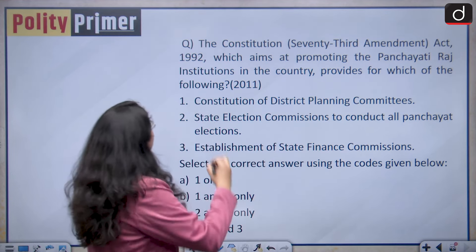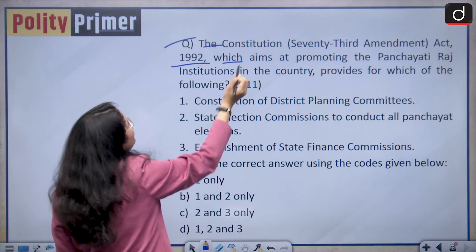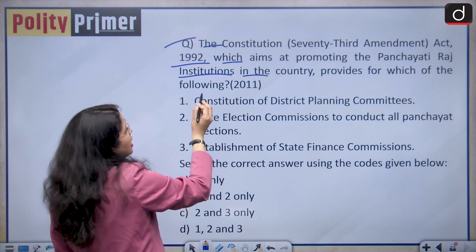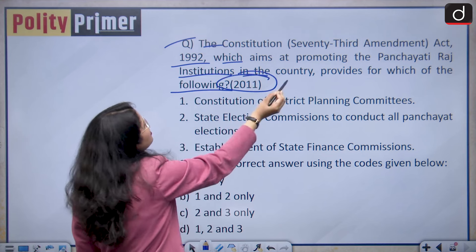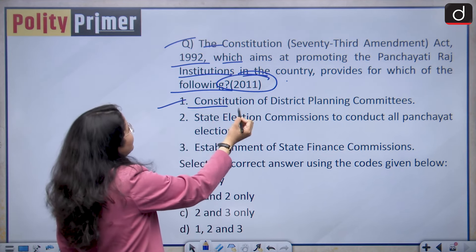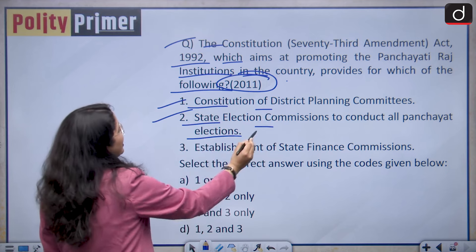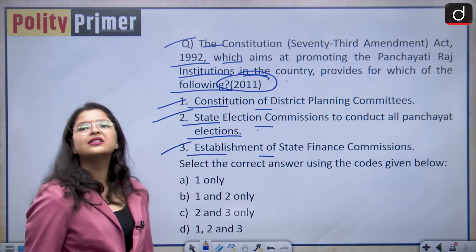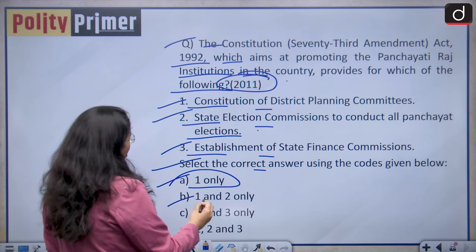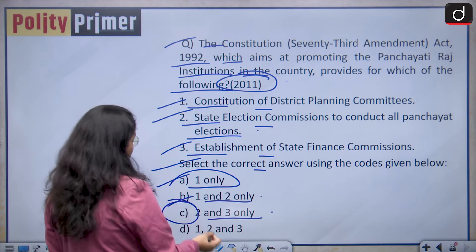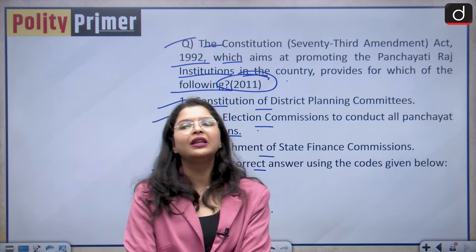Let us discuss the last question of today's discussion. The question is: the Constitution 73rd Amendment Act 1992, which aims at promoting Panchayati Raj institutions in the country, provides for which of the following? This was a PYQ asked in 2011. Statement 1: constitution of district planning committees. Statement 2: state election commissions to conduct all Panchayat elections. Statement 3: establishment of state finance commissions. Options: A is 1 only; B is 1 and 2 only; C is 2 and 3 only; D is all three. The answer to this question will be given by you in the comment box below.